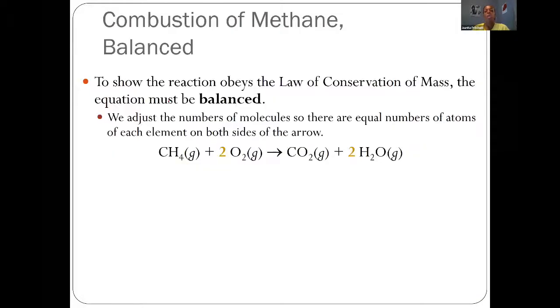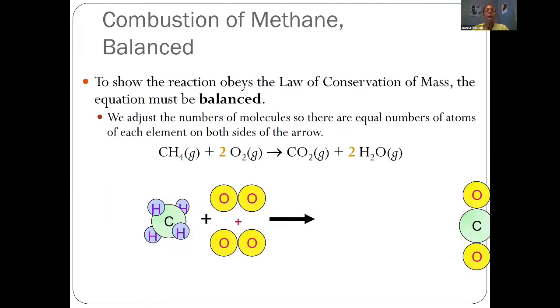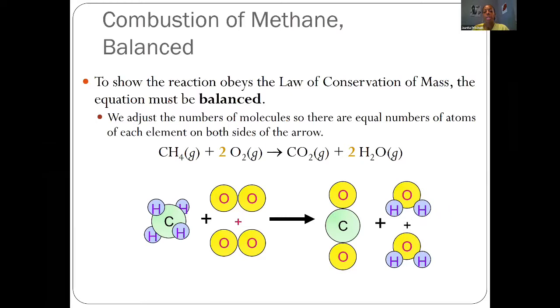In a balanced equation, we adjust the coefficient position by placing whole numbers in front of these molecules or elements to adjust the total number of atoms found on both sides of the equation. When we're done balancing, we should see equal numbers of atoms for all elements on both sides of the arrow. If we place a two before oxygen and two before the water molecules, that allows us to maintain the law of conservation of mass.